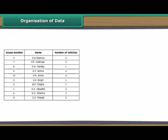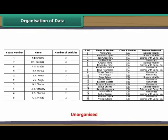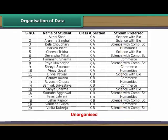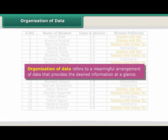Organization of data: The data collected by the RWA and the data provided by Sheetal to the academic in charge are unorganized. The former does not tell the RWA at one glance the number of residents who own more than one vehicle. Similarly, the latter does not tell the academic in charge at one glance the number of students who have opted for science. Organization of data refers to a meaningful arrangement of data that provides the desired information at a glance.